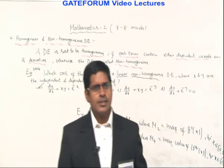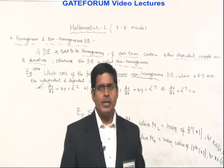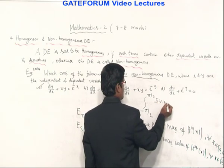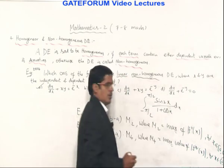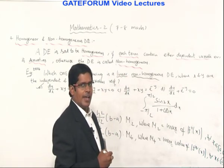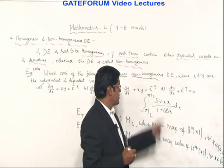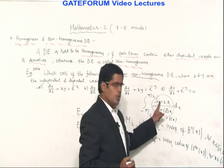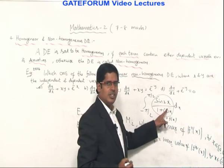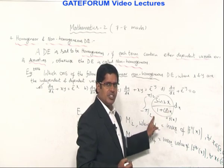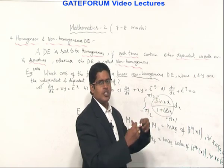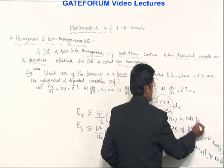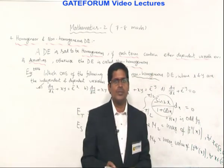Manish asks: integrate from −π/2 to π/2 of sin(2x)/(1 + cos x). Using properties of definite integrals with limits −a to a: the numerator sin(2x) is an odd function; the denominator 1 + cos x — constant is even, cosine is even, so even plus even is even. Odd divided by even is odd. By the property of definite integrals, the answer is 0.